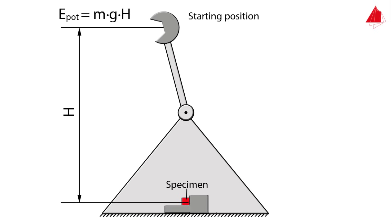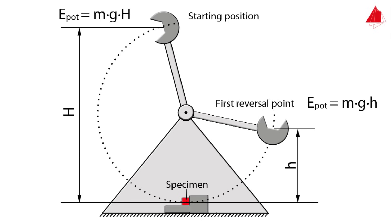After the pendulum has been released, the hammer moves downwards, hits the specimen and then only swings to height h. Exactly at the first reversal point, the pendulum again only has potential energy, which is M times G times h. The energy that has been absorbed by the specimen is called notch impact energy KV. It corresponds to the difference between the two potential energies.